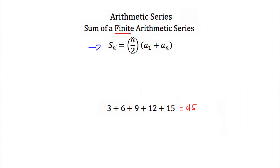The sum of a finite arithmetic series with n amount of terms — remember n is the amount of terms, and in this example n would be 5 — that sum is equal to n over 2, multiplied by a1 plus an. Here a1 is just the first term in our series, and since n is the number of terms, an would be the last term in our series. So in our example series, 3 would be a1 and 15 would be an, or you can think of that as a5.